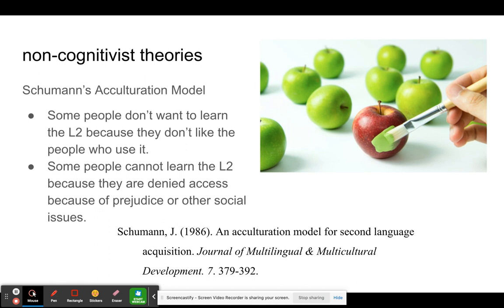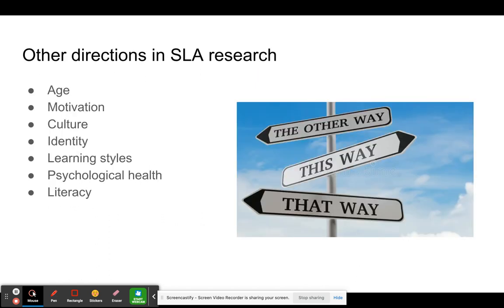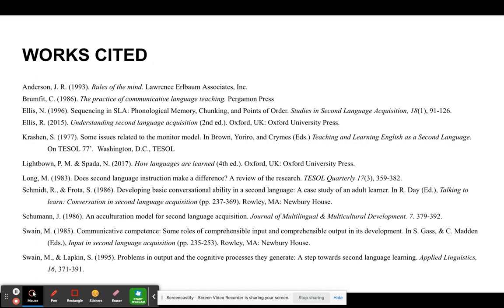So it's not necessarily about what's going on in the learner's mind. We're going to be talking a lot about these other directions in SLA research in the future — things like age, motivation, culture, identity, psychological health, literacy, previous education, learning styles, the effects of trauma, or learning disabilities — all beyond cognition and Krashen.